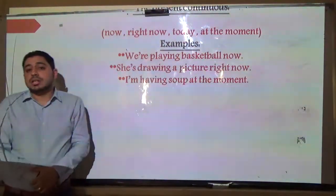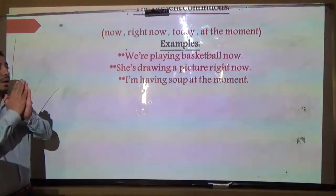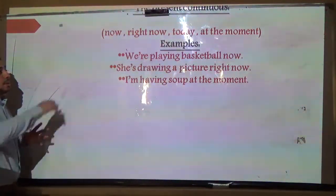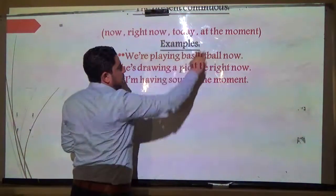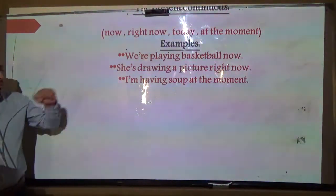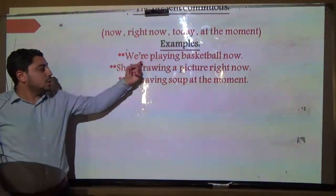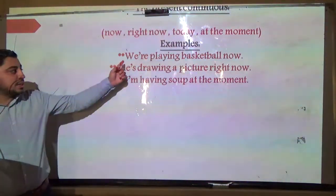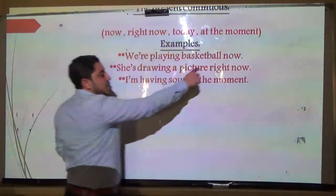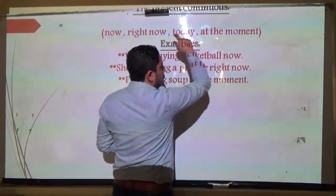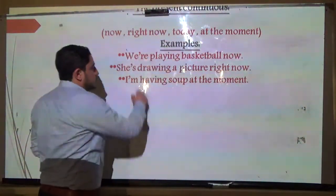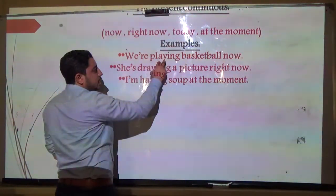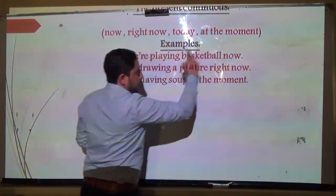These time markers represent something happening right now. For example: 'We are playing basketball now.' Here we use the present continuous form — are + playing — with the time marker 'now.'